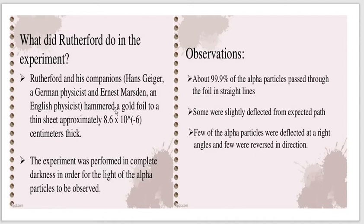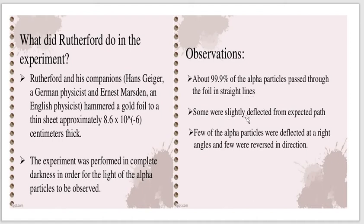H. Geiger, a German physicist, and E. Marsden, an English physicist, hammered gold foil into a thin sheet. The experiment was performed in complete darkness so that the flashes of light from alpha particles could be observed. Most of the alpha particles passed through the foil in straight lines. Some were slightly deflected from the expected path.